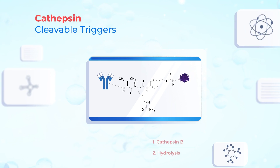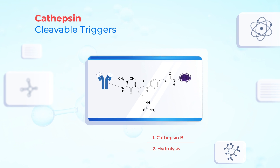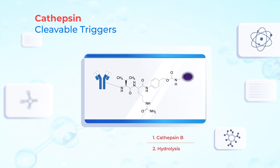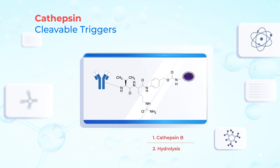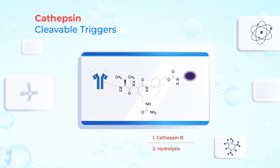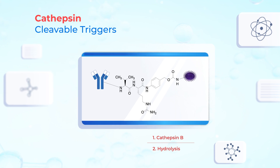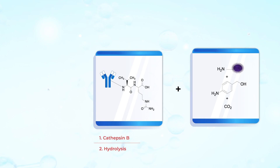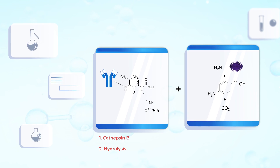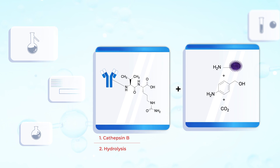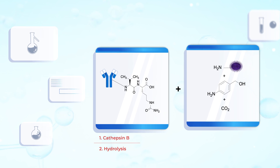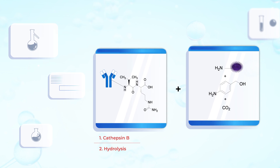Cathepsin B in the lysosome cleaves the dipeptide linkers containing valine (Val), citrulline (Cit), and para-aminobenzyl alcohol (PAB). When PAB and a drug are covalently bound with carbamate bonds, the drug can be released by hydrolysis after cleavage of the peptide bond between Cit and PAB.